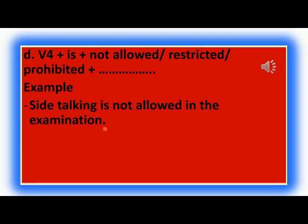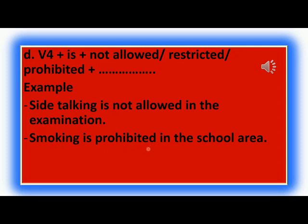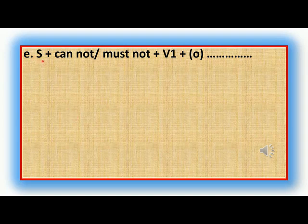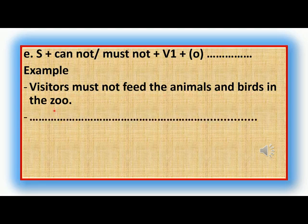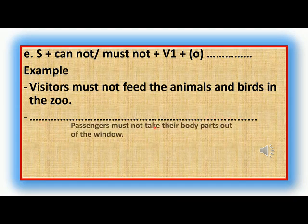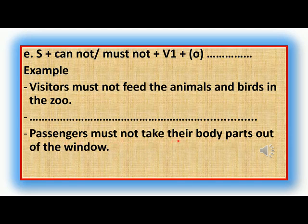Structure (d): 'V4 + is not allowed / restricted / prohibited.' Example: 'Side talking is not allowed in the examination hall.' / 'Smoking is prohibited in the school area.' Structure (e): 'Subject + cannot / must not + V1 + object.' Example: 'Visitors must not feed the animals and birds in the zoo.' / 'Passengers must not take their body parts out of the window.'